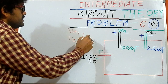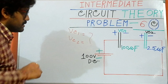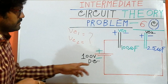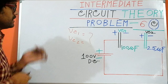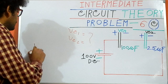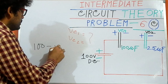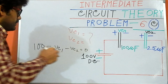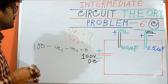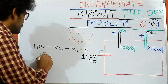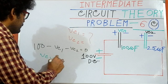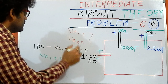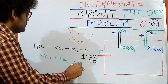Without wasting any time, if I apply KVL across this loop, the equation is: 100 minus VC1 minus VC2 equals 0. Rearranging this, I get VC1 plus VC2 equals 100. This is our first equation.